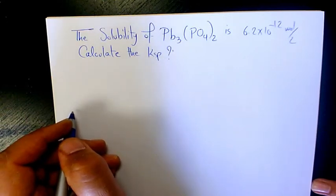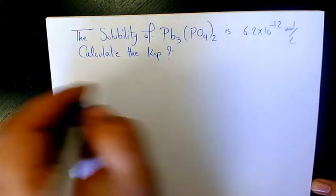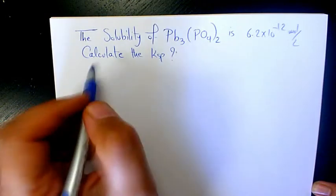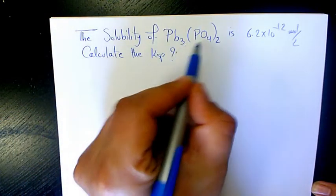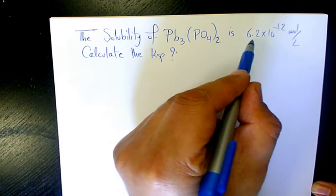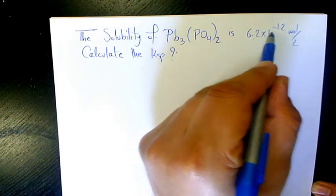What's up guys, this is Massey. Welcome to another video. In this video, I want to find the Ksp from solubility. The solubility of Pb3(PO4)2 is given, which is 6.2 × 10^-12 mole per liter.